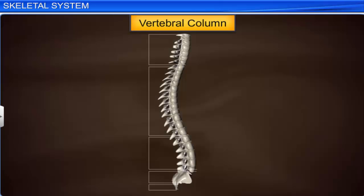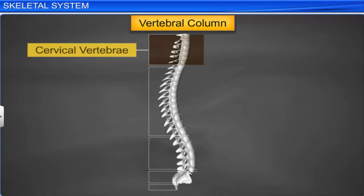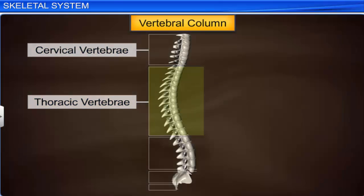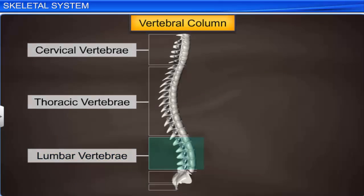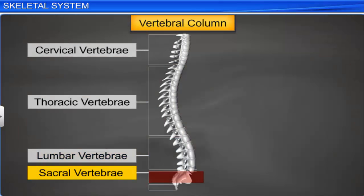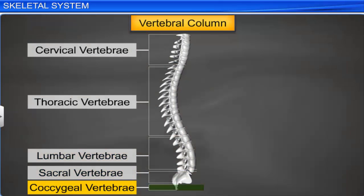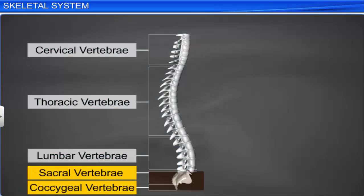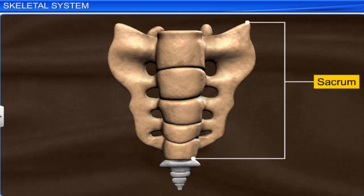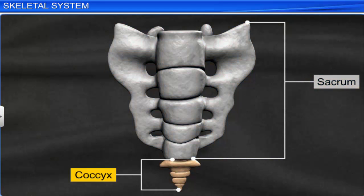The vertebrae are divided into five groups according to the region they occupy. The neck region has seven cervical vertebrae, followed by twelve thoracic, five lumbar, one sacral, and one coccygeal. In adults, the sacral and coccygeal vertebrae unite to form the sacrum and coccyx respectively.